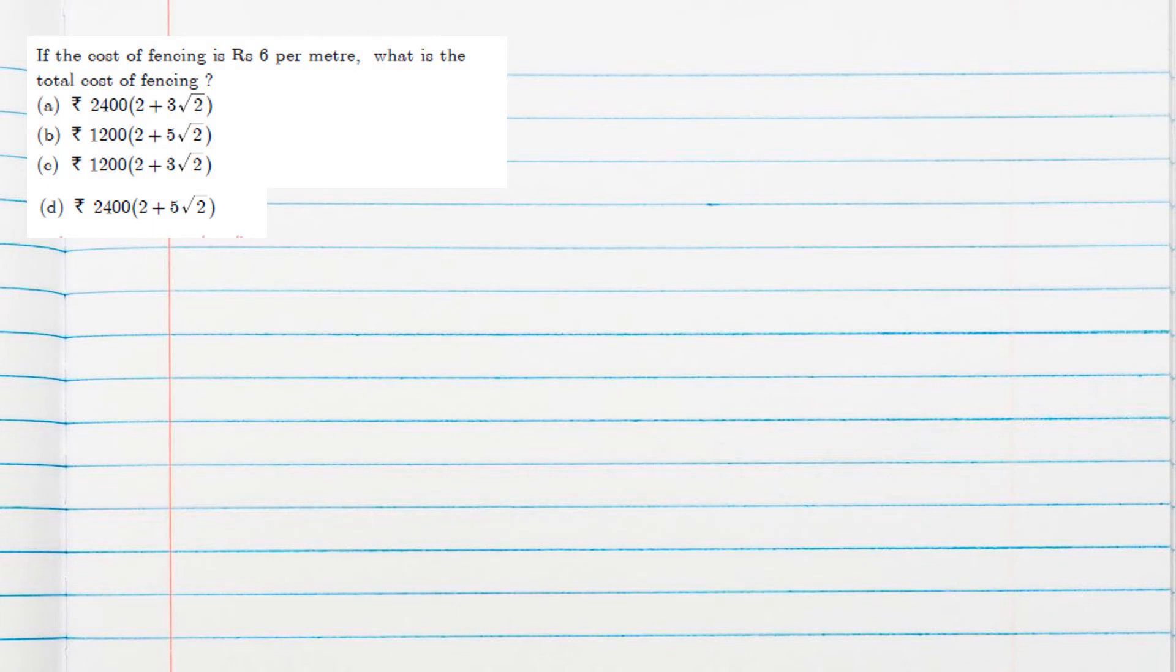Cost of the fencing is 6 rupees per meter. So total perimeter we got as 200 outside, 2 plus 3 root 2. This we got in the previous question. If we multiply with the cost, we will get the total cost. So 1200, 2 plus 3 root 2 rupees, which is in the C option.